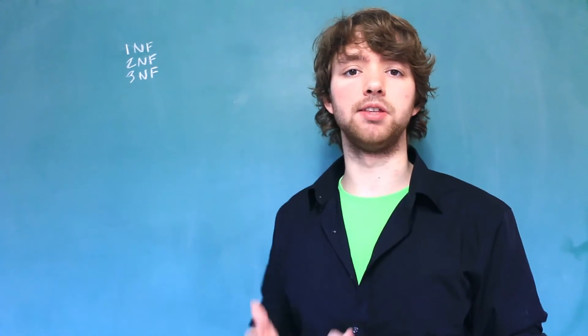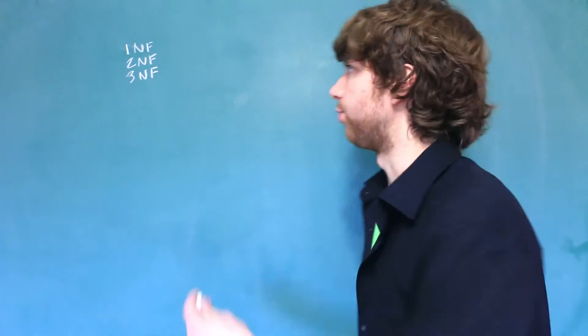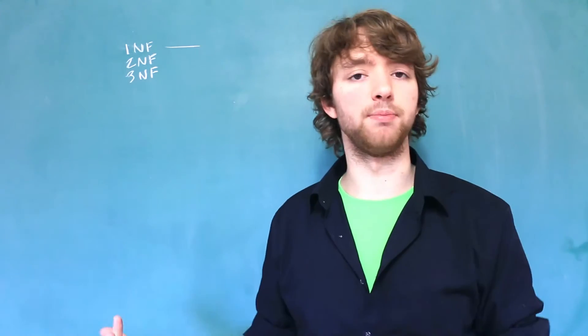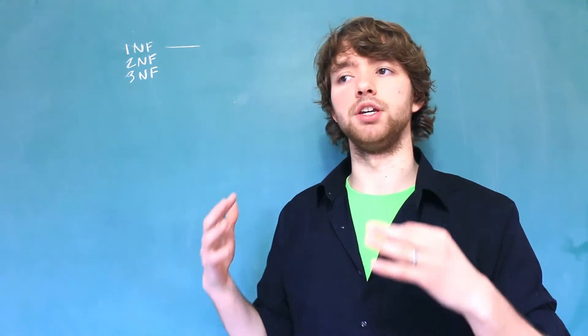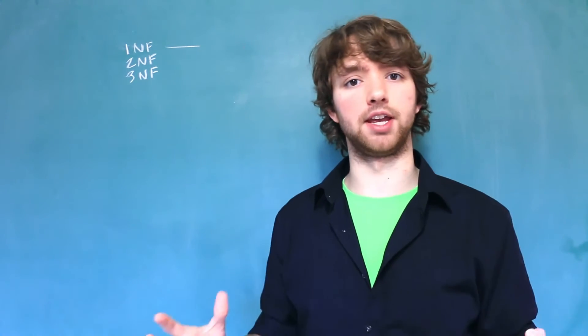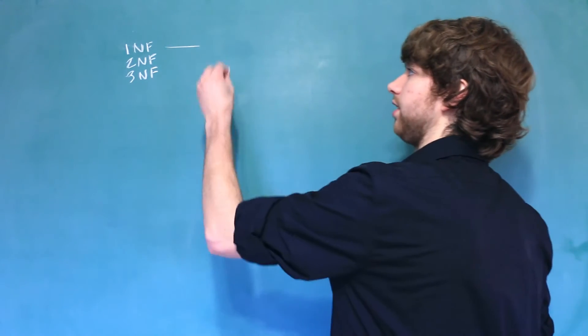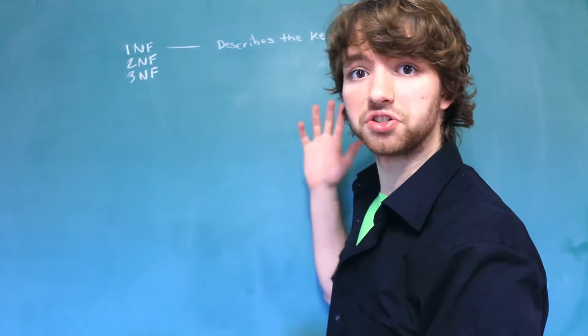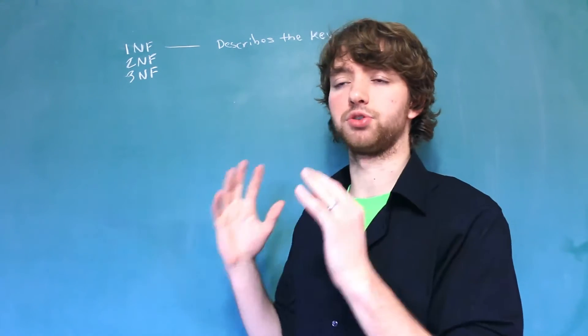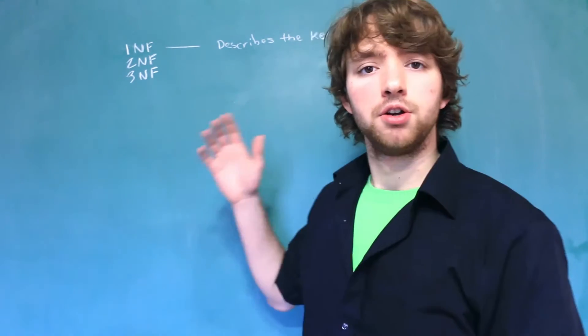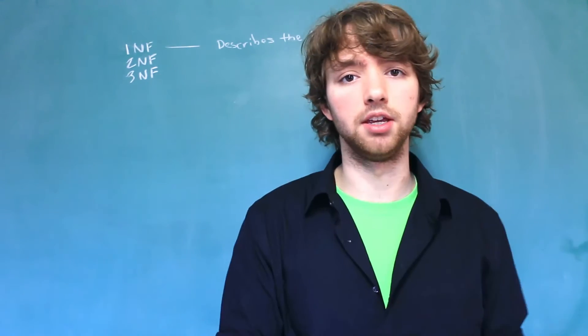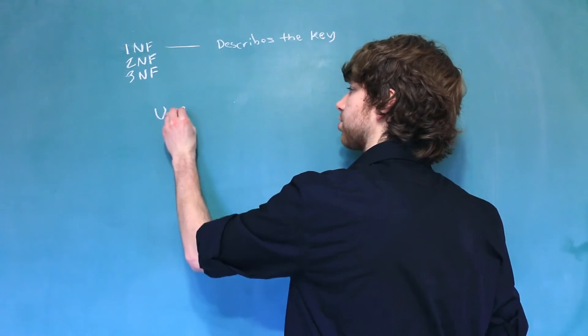That means that all of these relate to the key in some way. So, the first normal form, the purpose is to make sure everything's atomic for one, but ultimately, we want to make sure that the attributes describing the entity are appropriate for that table. We want to make sure that everything in that table describes the key in the smallest way possible, meaning columns are singular and each row only stores one value for that column. So, for first normal form, we need to make sure that all of our columns depend on the key.